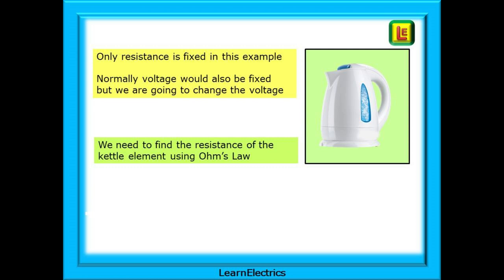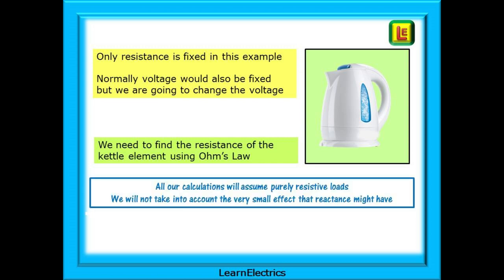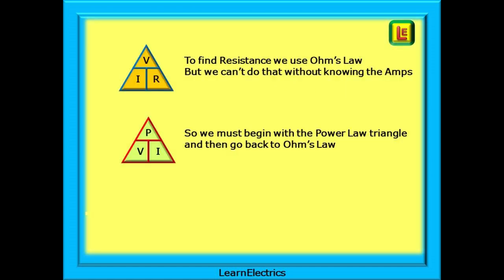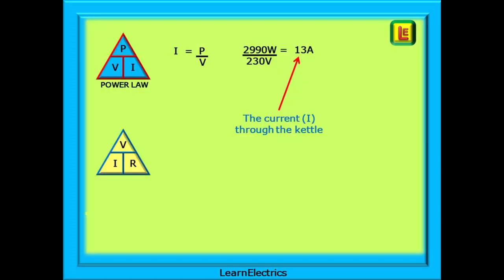Normally we would say the voltage is fixed at 230 volts nominal, but in this video we will change the voltage. The first thing we need to do is find the resistance of the kettle element using Ohm's Law. All our calculations will assume a purely resistive load, so we will not account for the very small effect of reactance. To find the resistance we need to know the current, so we must begin with the Power Law triangle, then go back to Ohm's Law.